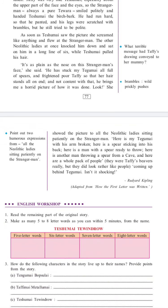Let's continue with the story. 'Here is my Tegumai with his arm broken. Here is a spear sticking into his back. Here is the man with a spear ready to throw. Here is another man throwing a spear from the cave. And here is a whole pack of people' — they were Taffi's bows really, but they did look like people — 'coming up behind Tegumai. Isn't it shocking?' By Rudyard Kipling, adapted from 'How the First Letter Was Written.'